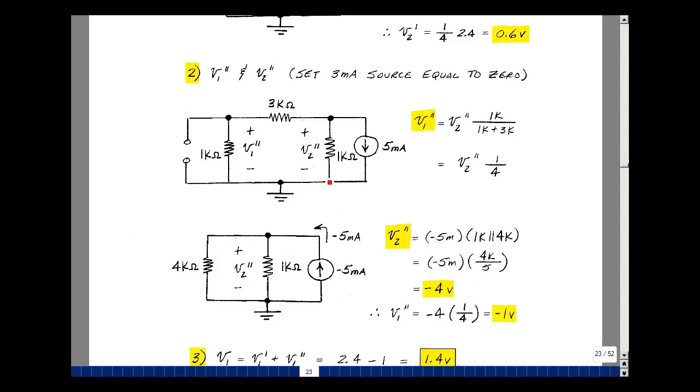Whatever V2 double prime is, again, I could solve for V1 double prime because this current is the same. I could use voltage divider. V1 double prime is equal to V2 double prime times 1k over 1k plus 3k, and again, it's equal to a quarter.